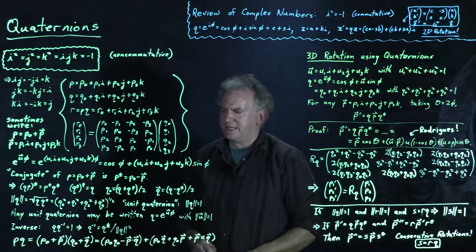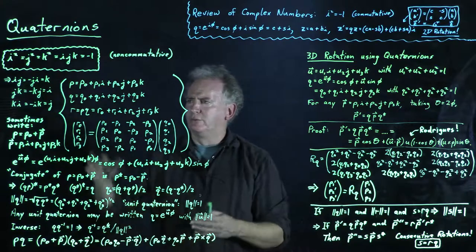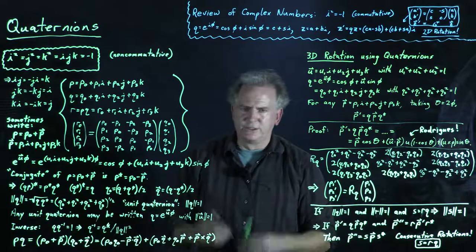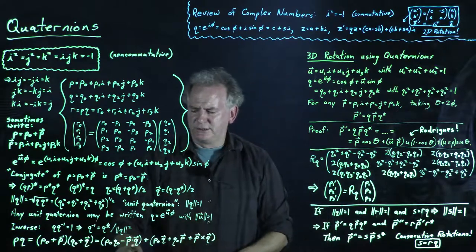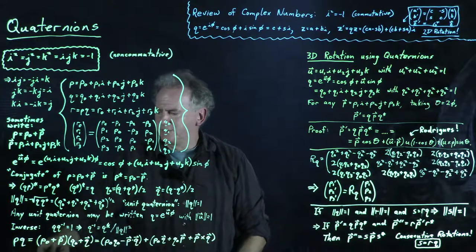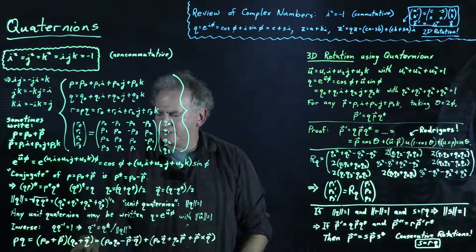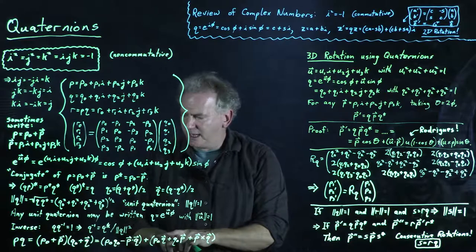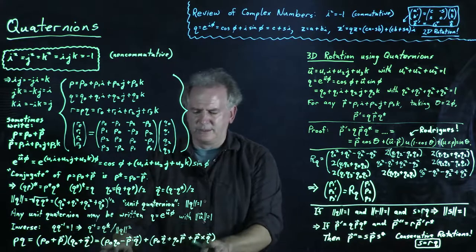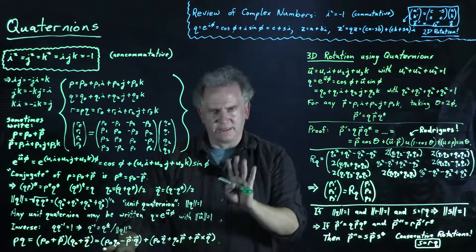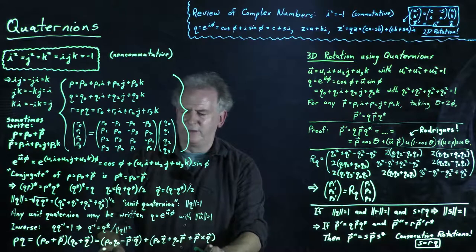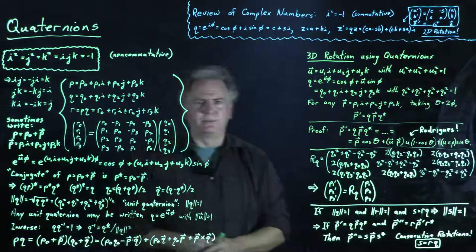Now that we know how to multiply p and q together, we can also write the product using dot products and cross products. Go back to your vector calculus, check the definitions of dot and cross products, and verify: if we write p = p₀ + p⃗ and q = q₀ + q⃗ and multiply them together, we get 16 terms that can be arranged in a form involving dot and cross products. Pause the video and confirm that.